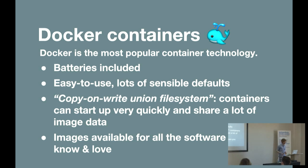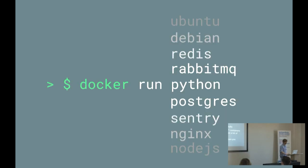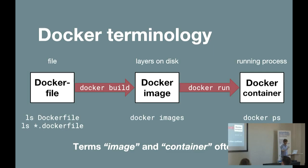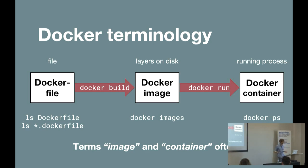Docker images are available for all software, so essentially anything you might want to run, you can run in one command, given that you're willing to wait for the whole image to download. Just a note on Docker terminology: you start out with a Dockerfile, which is a simple text file that defines steps to build your Docker image. Your Docker image is kind of like a snapshot of a container - you can think of it a bit like a snapshot of a VM. And then when you run the image, you have a container. The terms image and container are often conflated, and I'm going to carry on doing that.